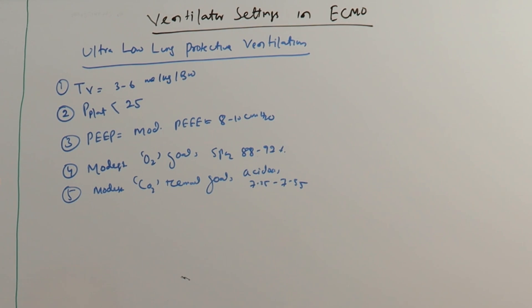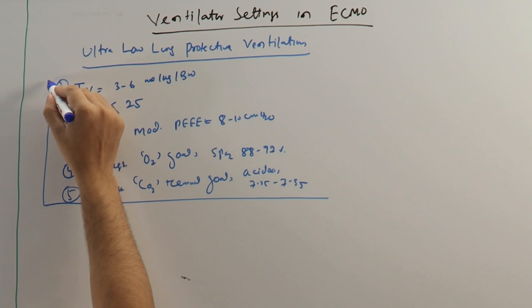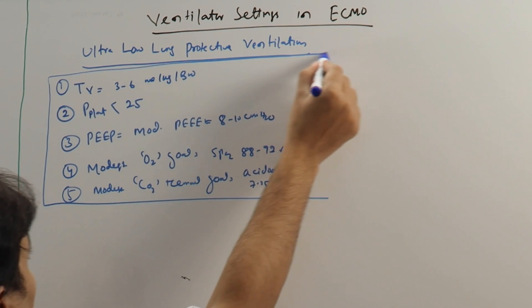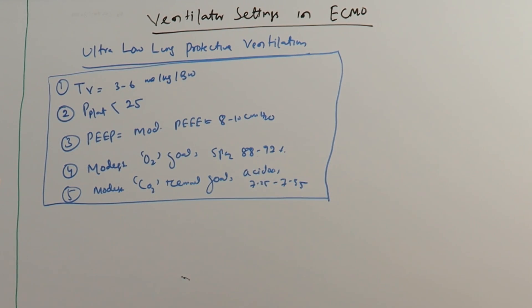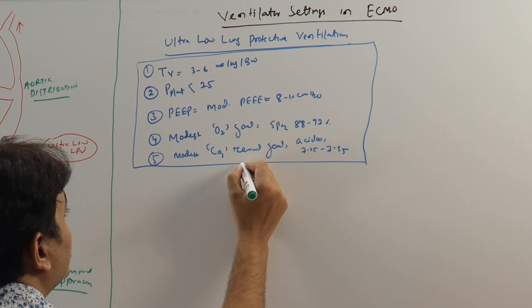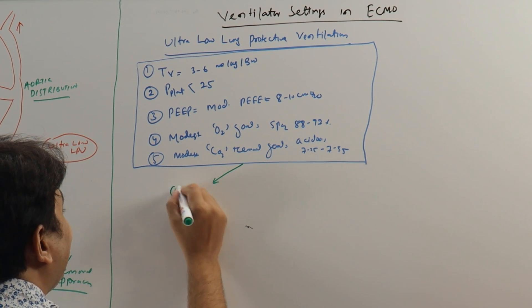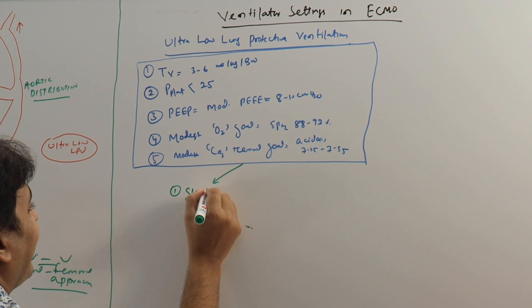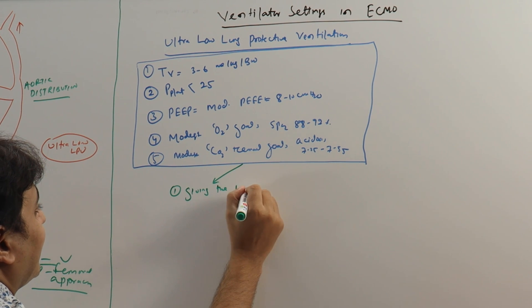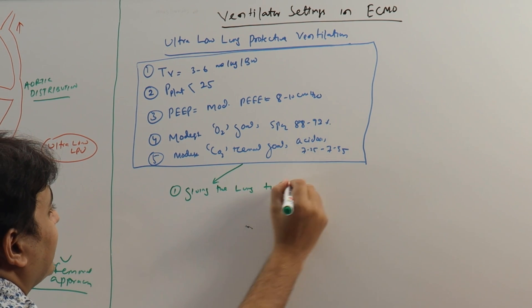These are the settings that you have to put in a patient who is put on ECMO initially. This is called ultra low protective ventilation. And why are you doing this? Because you are giving the lungs time for improvement, for recovery.